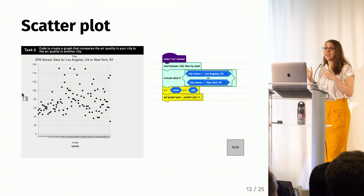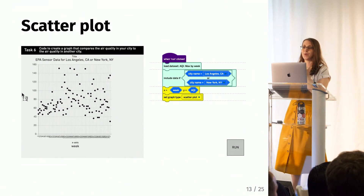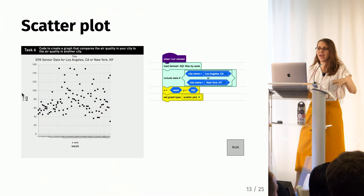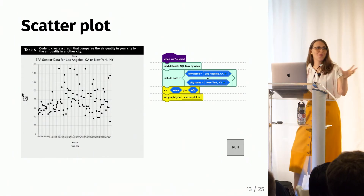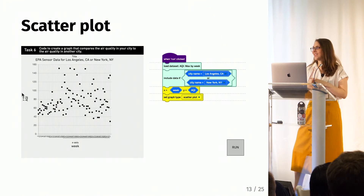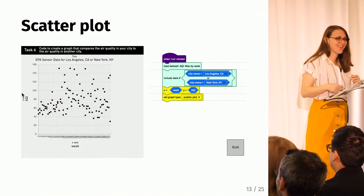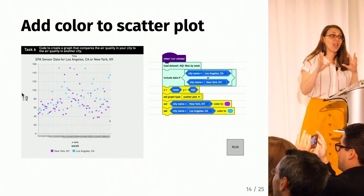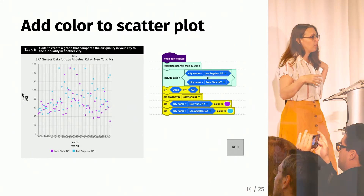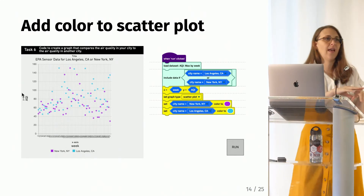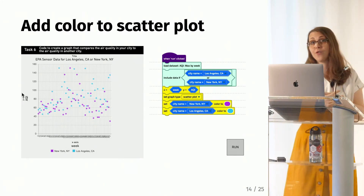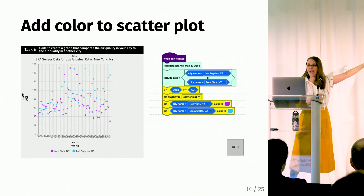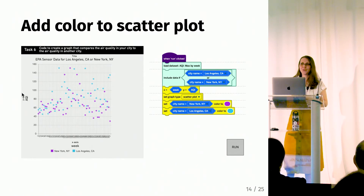Zooming out, I've decided to make a scatter plot in response to this prompt. You can see I've set my X and Y variables and my graph type. However, all the dots are black, so I can't quite answer the prompt yet — I need to add color. So we add the set color blocks, and then we start to see something popping out with the scatter plot. Now we can see that LA and New York City follow a similar trend over the year with worse air quality in the summer, but LA seems to have more higher points.